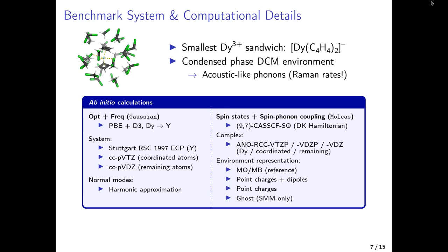For the electronic structure, we use MOLCAS with CASSCF and spin-orbit coupling: a 9-in-7 active space with 9 f-electrons of the dysprosium ion in 7 f-orbitals. We calculate the 18 lowest-lying roots to describe all relevant magnetic states involved, and compute gradients for all 18 roots to parameterize the LVC model.